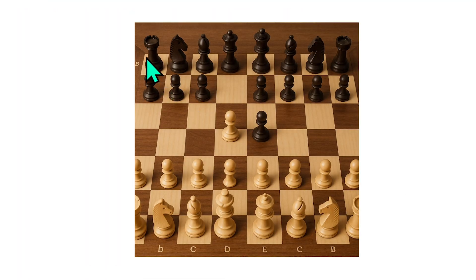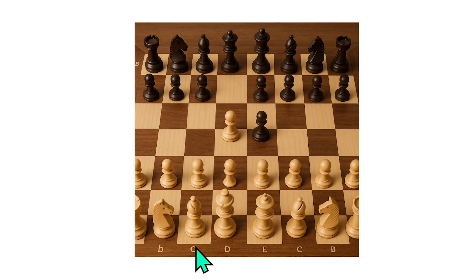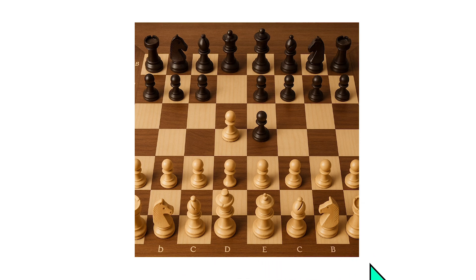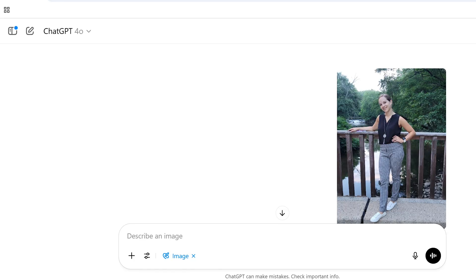I then tested ChatGPT 4.1 on the same chess position and it also got it incorrect. The pawns are all in the third row instead of the second row. It attempted to label the files — A, B, C, D — and got four of them right, but then labeled E as 'C' again, when it should continue B, C, D, E, F, G, H. There's also a labeling error on row eight. The board looks nicer, but it's still a failure.